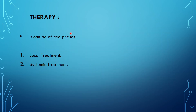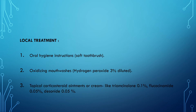Coming to the treatment, it can be of two phases: local treatment and systemic treatment. Local treatment includes oral hygiene instructions, usually with a soft toothbrush, oxidizing mouthwashes such as 3% hydrogen peroxide diluted, and topical corticosteroid ointments or creams such as triamcinolone 0.1%, fluocinonide 0.05%, or desonate 0.05%.